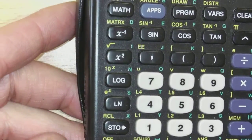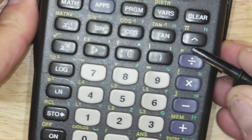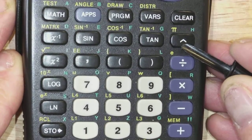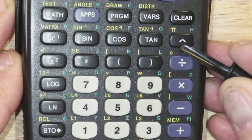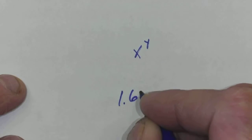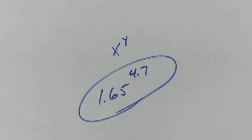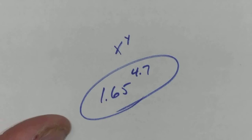Most of the calculators nowadays are just amazing. You've got this little caret button that has this little upwards arrow right here. That's how we're going to go ahead and raise something to a power. If you don't have that, then you're going to have a button that looks like X raised to the Y. So to practice this, let's go ahead and go 1.65 raised to the 4.7. Go ahead and take 1.65, raise to 4.7. What do you get?